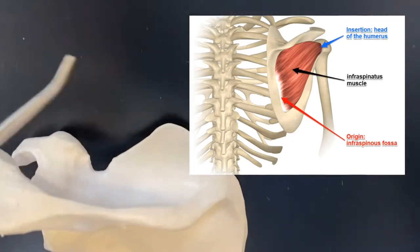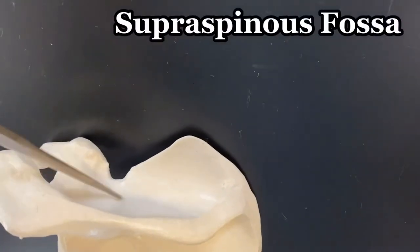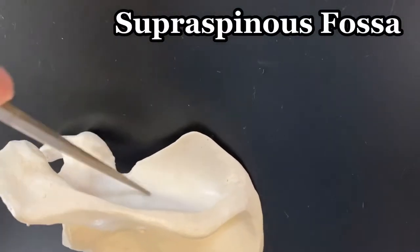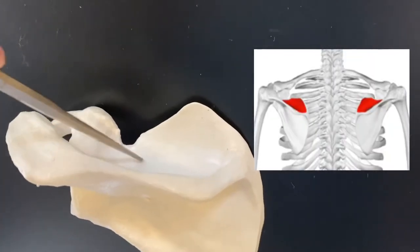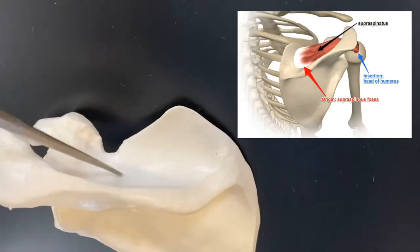And also up here, the supraspinius fossa. Supraspinius fossa, you guessed it. That is where the supraspinatus muscle would originate.